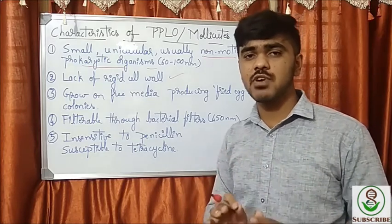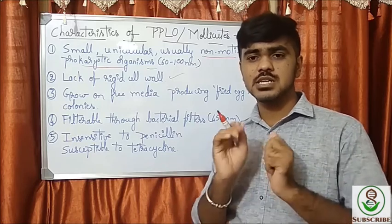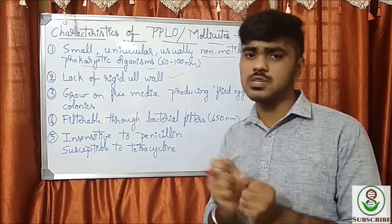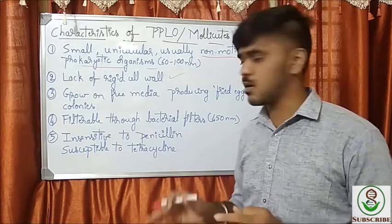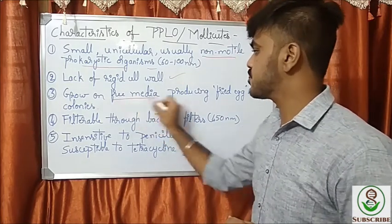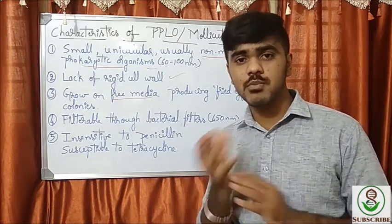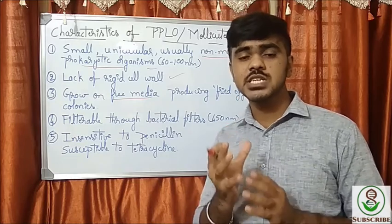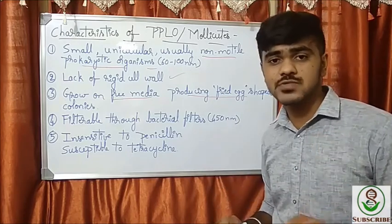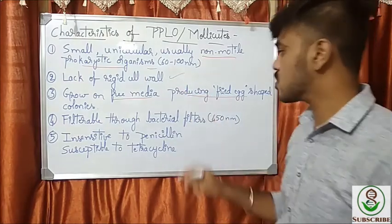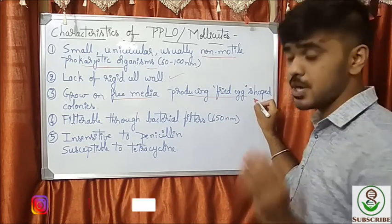We don't say there is no layer in the cell wall, but the strong or rigid cell wall is absent in these organisms. When they grow on free media in petri plates and form colonies, we observe fried egg-shaped colonies.